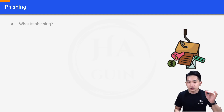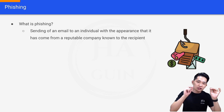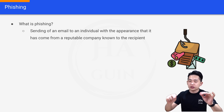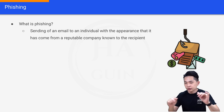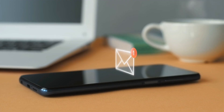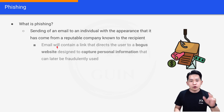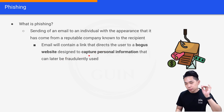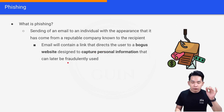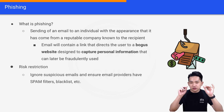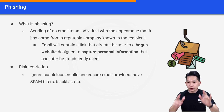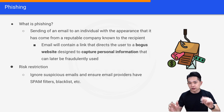The next threat is phishing. Phishing is the sending of an email to an individual with the appearance that it has come from a reputable company known to the recipient. You'll be getting fake emails from people acting as your school or even your bank, and the email will contain a link that directs the user to a bogus website designed to capture personal information that can later be fraudulently used. To restrict the risk, you should ignore suspicious emails and ensure email providers have spam filters and blacklists.